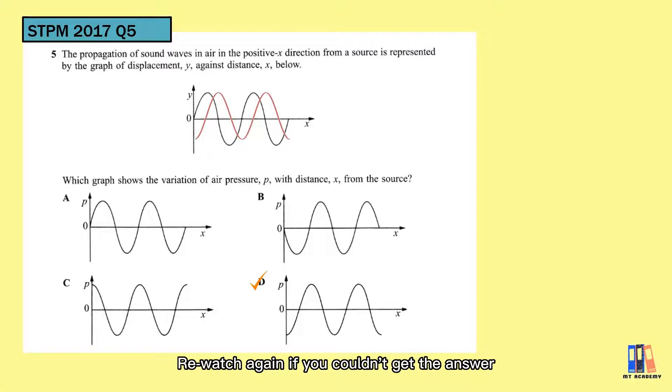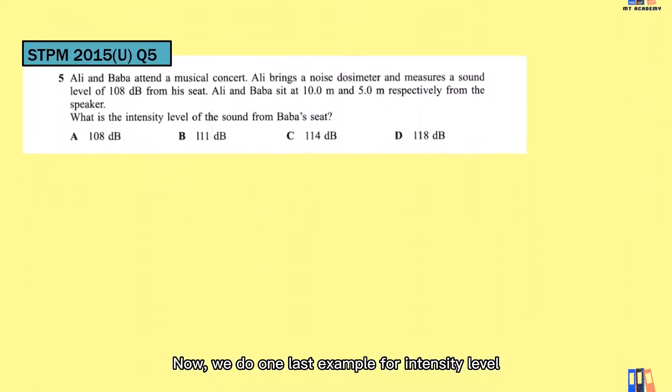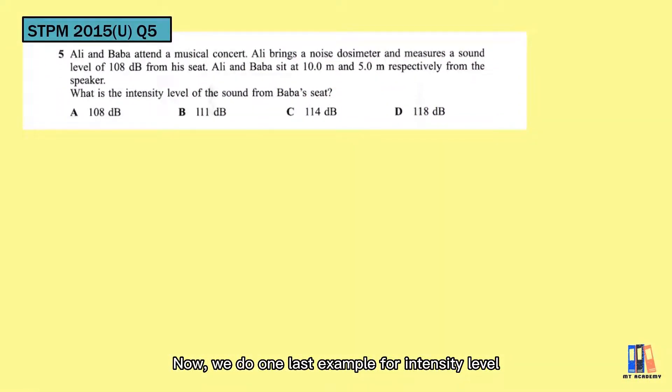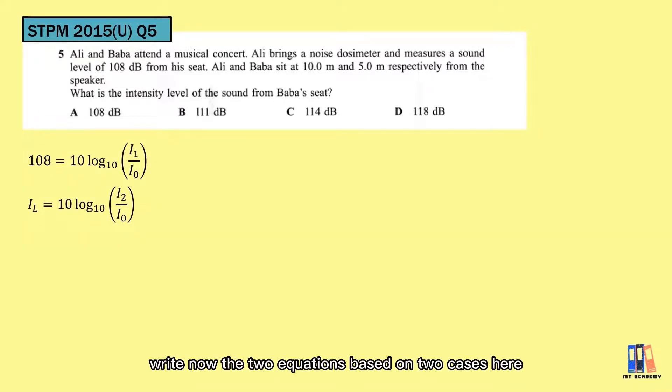So now, we do one last example for intensity level, which is from STPM 2015. Ali and Baba attend a musical concert. They sit at 10 meter and 5 meter respectively from the speaker. The sound level at Ali, which is 10 meter away, is 108 dB. What is the intensity level of sound at Baba's seat? We have learned the formula of intensity level. So write down the two equations, there's two cases here, and we can do the simultaneous. So since this is a logarithm, we can make use of the division law in this topic.